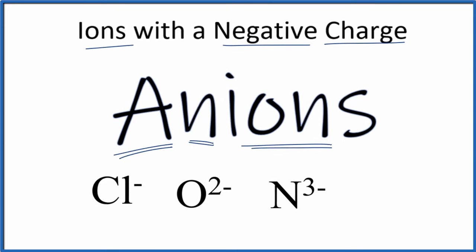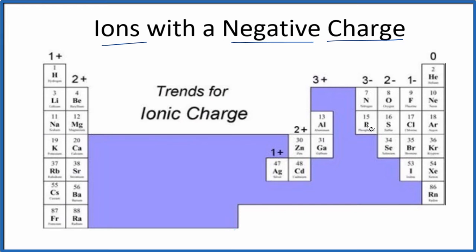Let's take a look at the periodic table. The periodic table is nice because it tells us the ionic charges — it gives us a pattern. Group 1 elements are all 1+, Group 2 are 2+, then skip the transition metals. We have 1+, 2+, and 3+, but all of the negative ions are over here: nitrogen is 3⁻, oxygen is 2⁻, and chlorine is 1⁻.